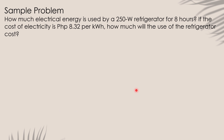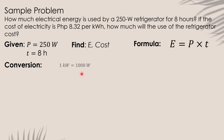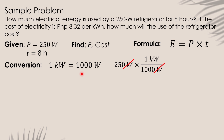Let us have a sample problem. How much electrical energy is used by a 250-watt refrigerator for 8 hours? If the cost of electricity is 8.32 pesos per kilowatt-hour, how much will the use of the refrigerator cost? Our given: power = 250 watts, time = 8 hours. We need to find the energy and the cost. Before calculating, let us first convert 250 watts to kilowatts. Since 1 kilowatt equals 1,000 watts, 250 divided by 1,000 equals 0.25 kilowatts.